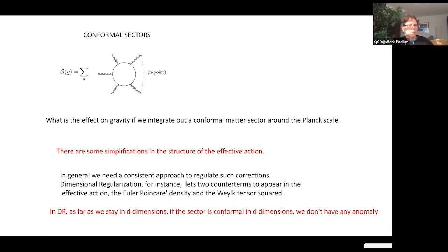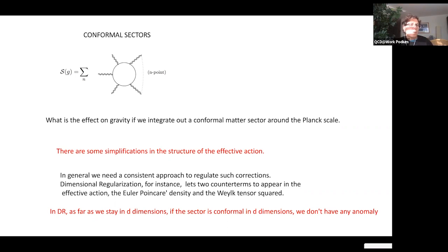All this discussion of the effective action is relevant for integrating out the conformal sector. We now switch to free field theory because if we want to look at four-point functions from a physical point of view — especially for applications to gravity — we need to move fast. Free field theory provides a complete realization of the conformal theory, not the most general one, but sufficient. We can compute these loop diagrams by letting conformal degrees of freedom run inside the loops.